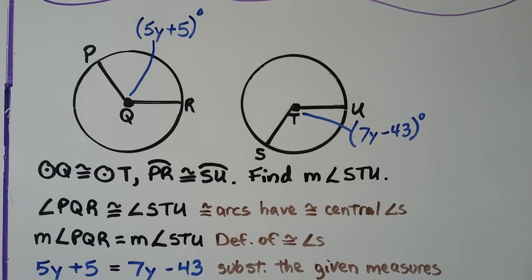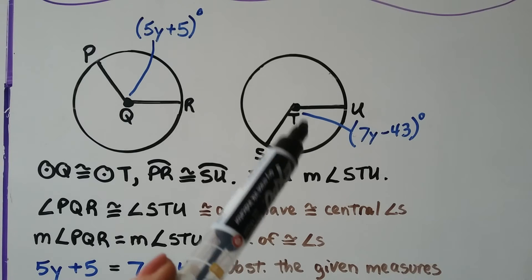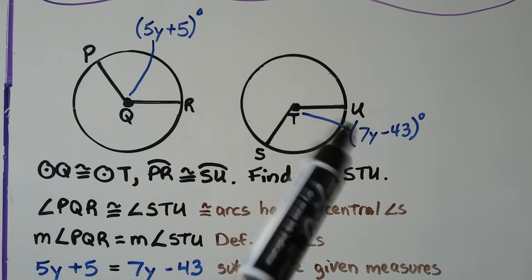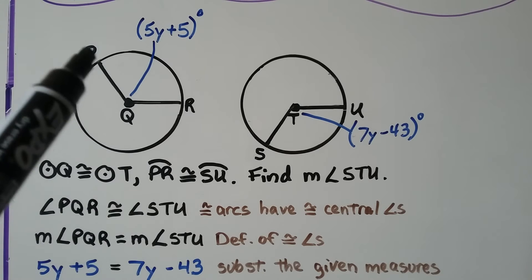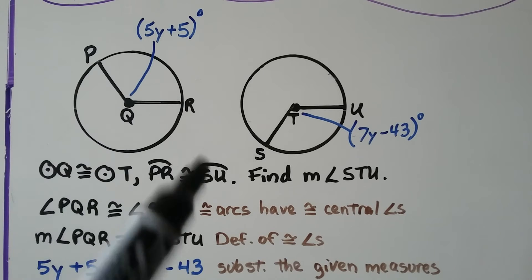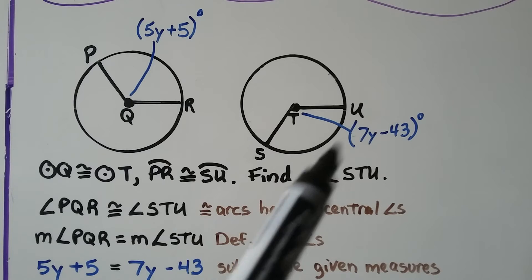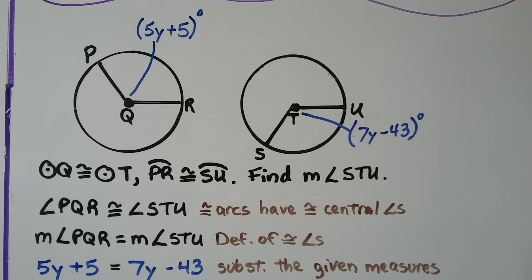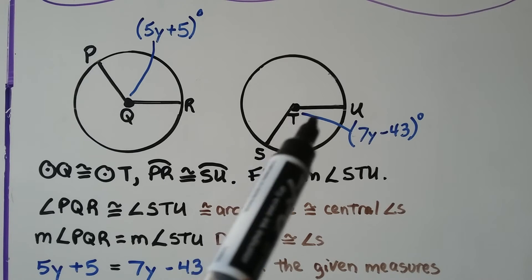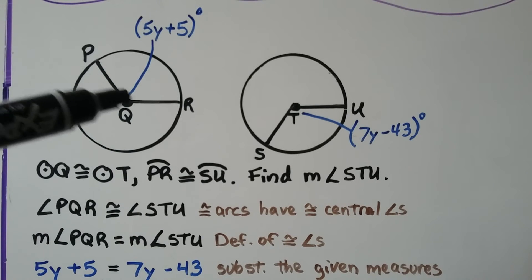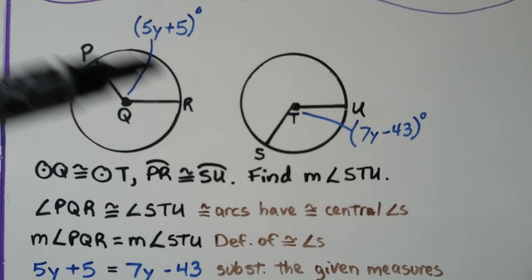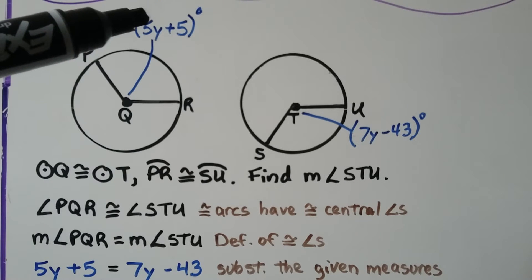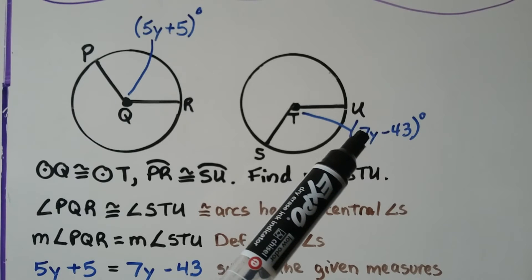Now, here we have 2 circles. And it's giving us that circle Q, this circle, is congruent to circle T. So we have 2 congruent circles. It's also giving us that arc PR, right here, is congruent to arc SU, right down here. We need to find the measure of angle STU. We need to find this angle measure. Well, it's telling us that this arc is congruent to this arc, and that this one is 5y plus 5, and this one is 7y minus 43.